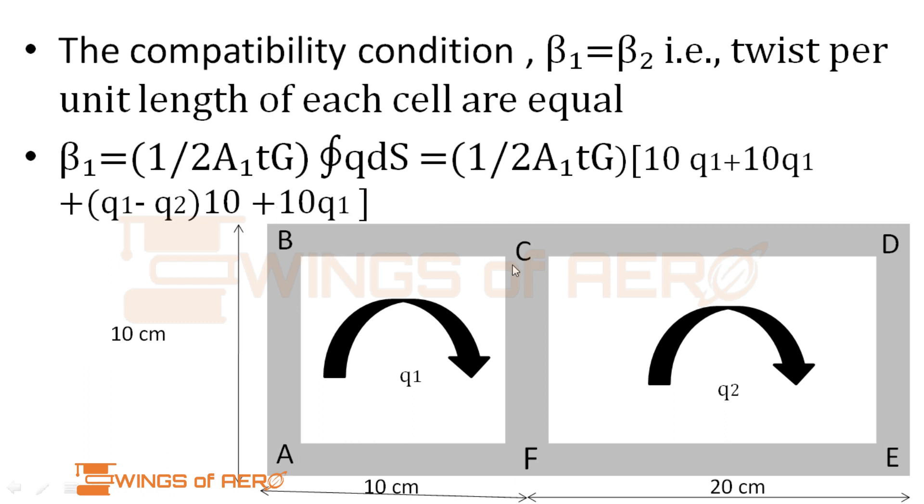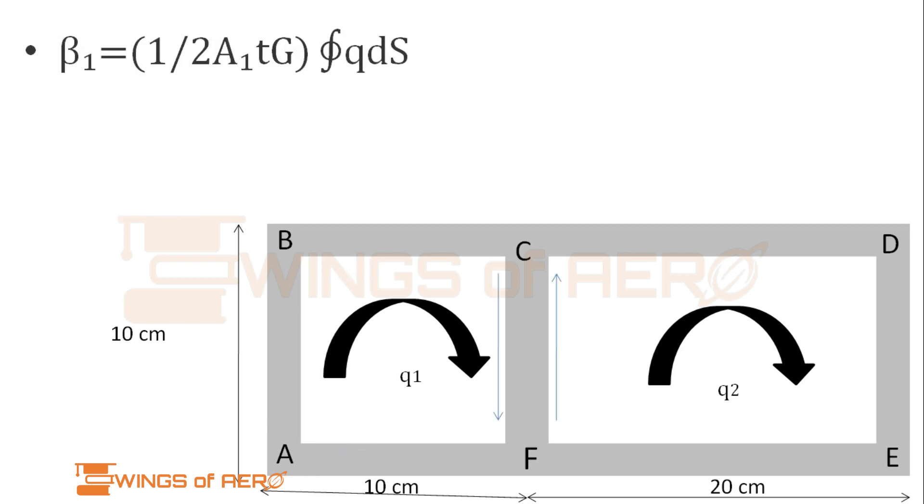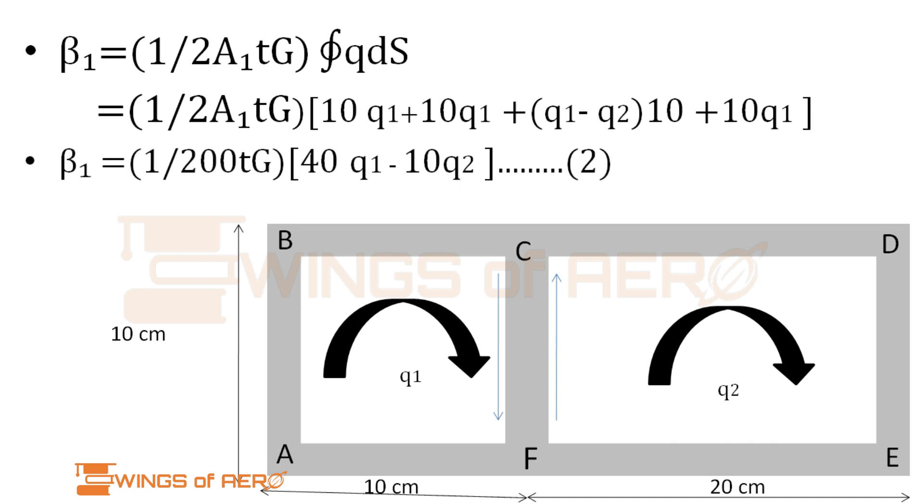Then comes CF. Here we have q1 and we have q2. q2 is directing upward and q1 is directing downward. Since we're finding beta 1 with respect to cell 1, for CF we get q1 minus q2 of this length. Then FA is again q1 into length 10. Simplifying, we get beta 1 equals 1 by (applying the value of A1) 200tG open bracket 40q1 minus 10q2. Name this as equation 2.